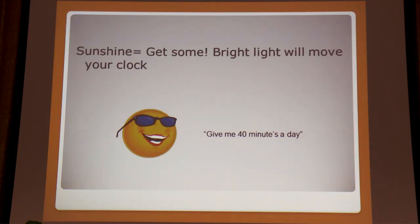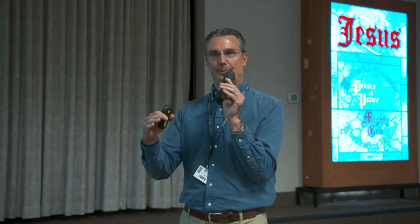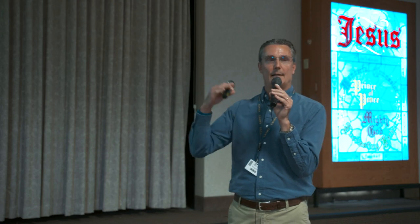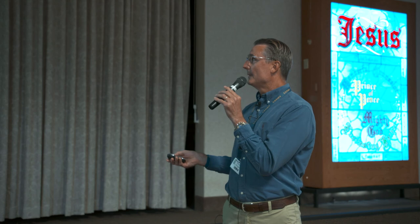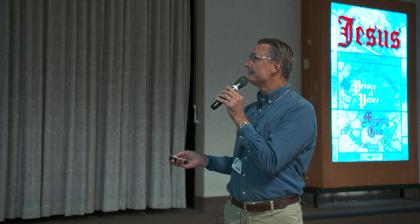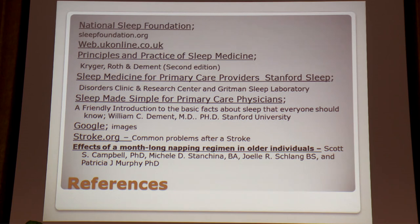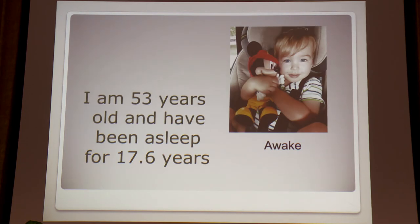Get sunshine — bright light will move your circadian clock. Morning sunshine helps you go to bed early, while late afternoon sunshine will keep you up. Aim for about 40 minutes a day. I am 53 years old and I have been asleep for 17.6 years — one third of my life. Thanks for having me.